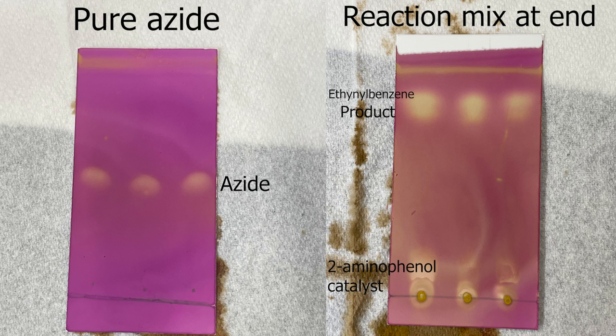On the left we can see the TLC of the pure azide and on the right of the reaction mixture. As we can see, the spot from the azide is no longer seen in the reaction mixture. So it has all been consumed and the reaction is finished.